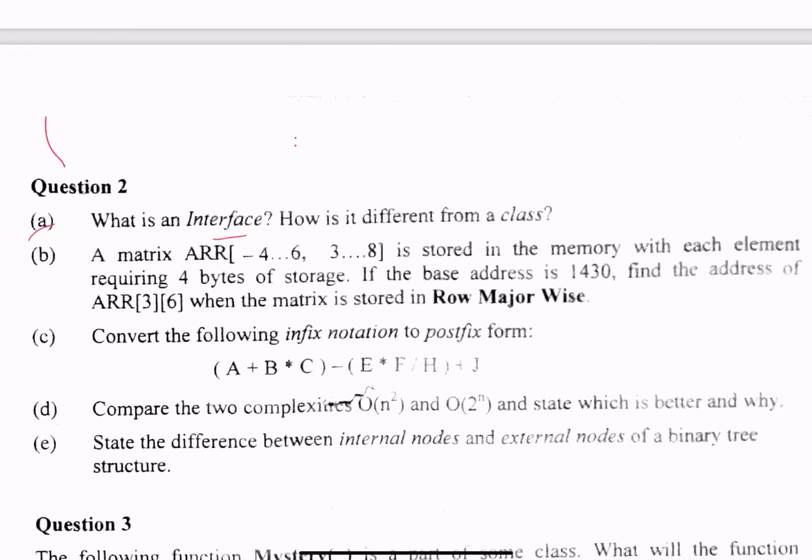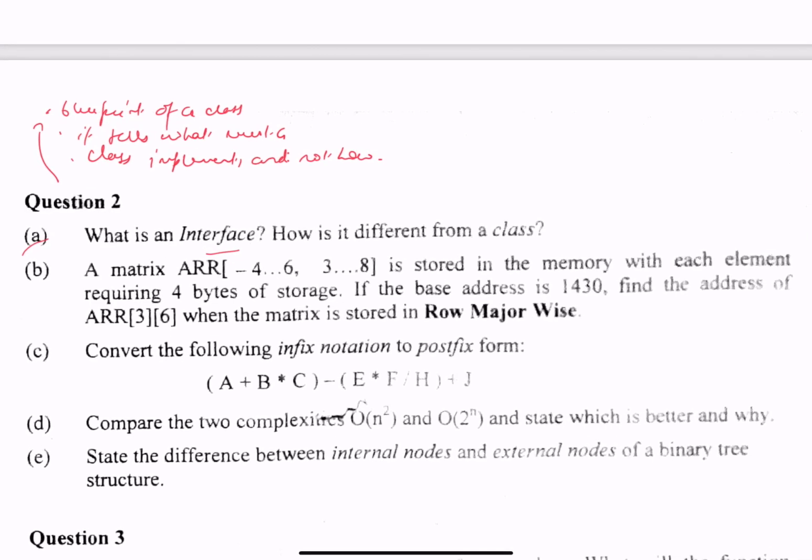An interface is a blueprint of a class. It tells what a class must implement, but not how. So interface basically describes the list of methods that a class must implement but not how. This is abstraction, so it implements abstraction.